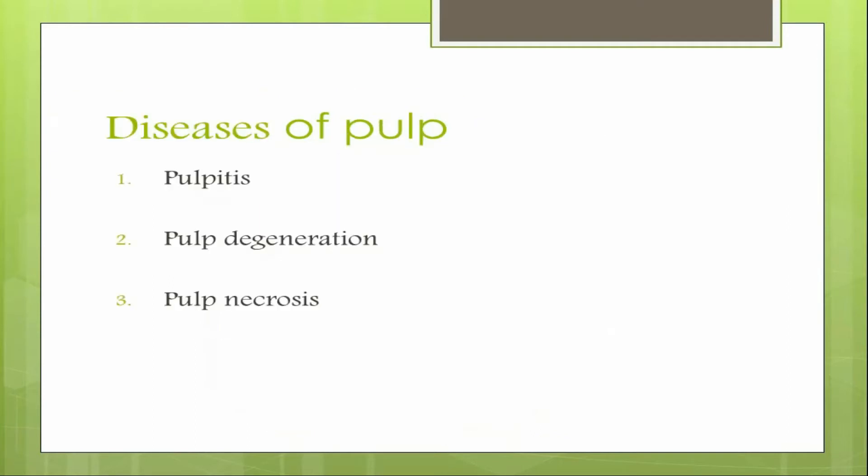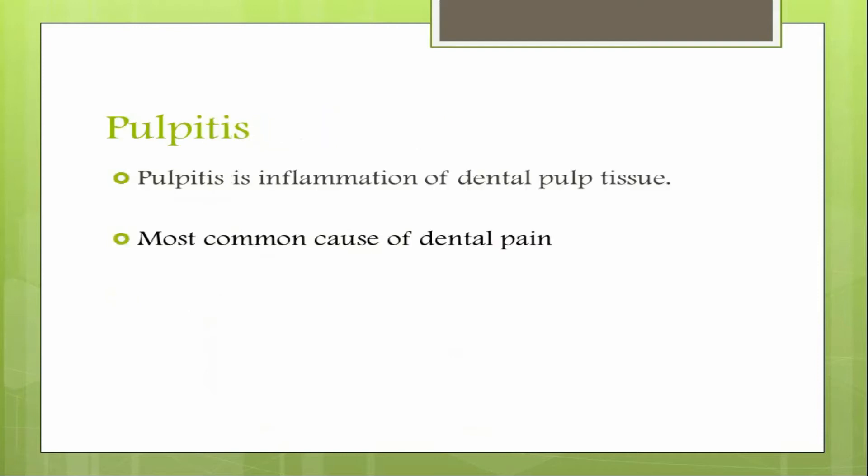The diseases of the pulp can be broadly classified into three categories: pulpitis, pulp degeneration, and pulp necrosis. We will discuss pulpitis in detail in this video. 'Itis' means inflammation, and inflammation is defined as the body's response to injury due to any agent.